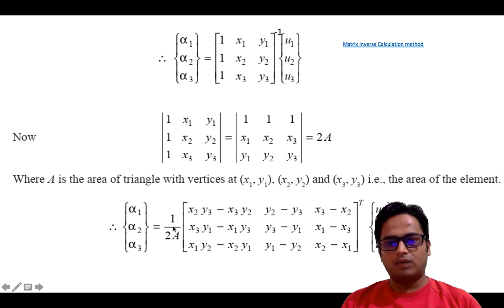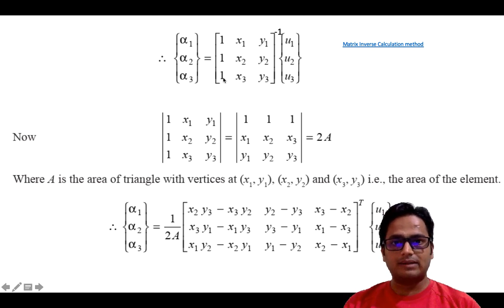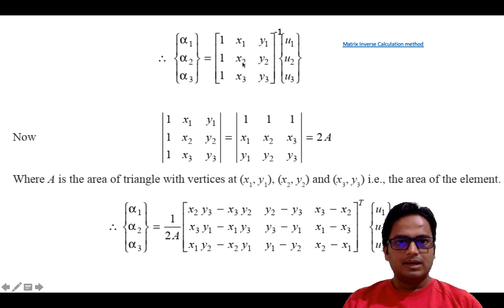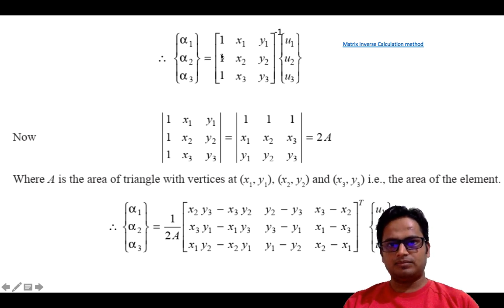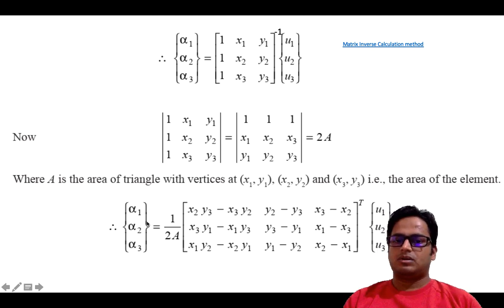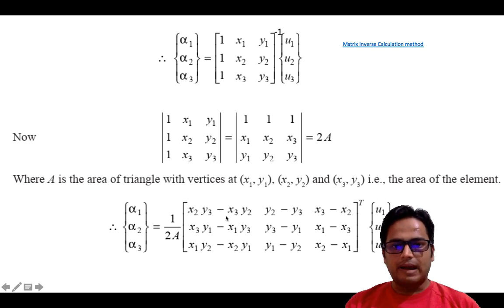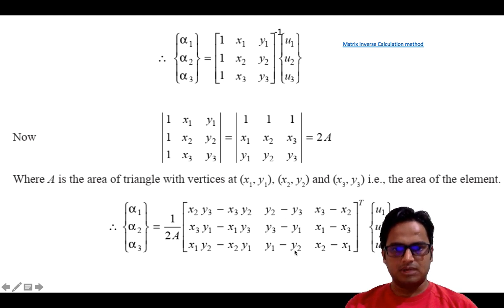So we write 1 over 2A multiplied by the adjoint of the matrix. To find each element of the adjoint, for a given position we omit the corresponding row and column and perform cross-multiplication. For example, that gives x2·y3 minus x3·y2. Similarly for another position, omitting the respective row and column gives x1·y3 minus x3·y1. To simplify the expression, we write a1, a2, a3 for those terms, b1, b2, b3 for another set of expressions.